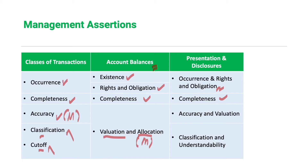When we design audit objectives related to classification and cutoff of account balances, those will be part of our procedures related to valuation and allocation. For presentation and disclosure, we have accuracy and valuation — covering measurement of disclosures — and classification and understandability. We will discuss this further when we cover audit procedures in a future topic.